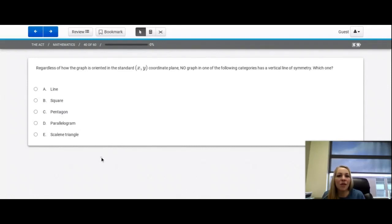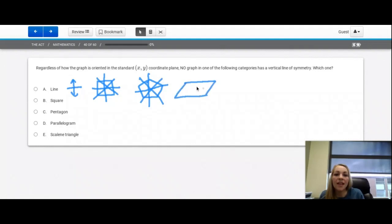a line, we can fold that on top of each other. A square has many lines of symmetry, right? I can fold into half there, there, there, there. A pentagon, I'm assuming they mean a regular pentagon in here. So I can fold that across there. I can do it here. There's multiple places I can do this one as well. And then the parallelogram will fall on top of itself on the diagonals. But we can jump right to the scalene triangle because we know that none of these have equal side lengths.